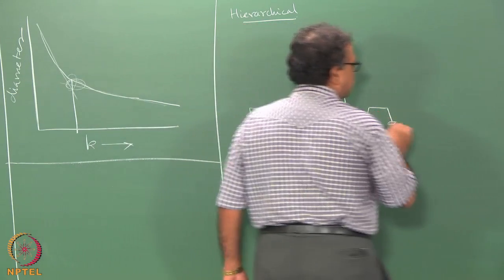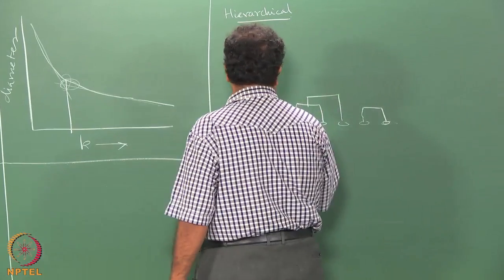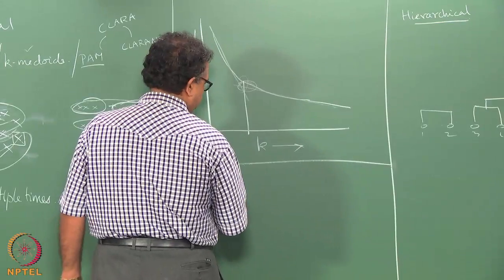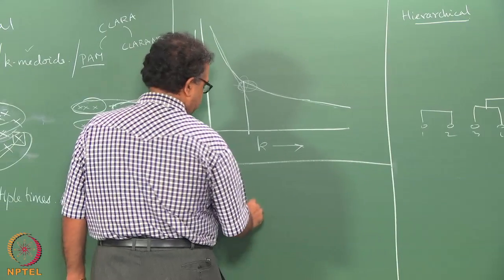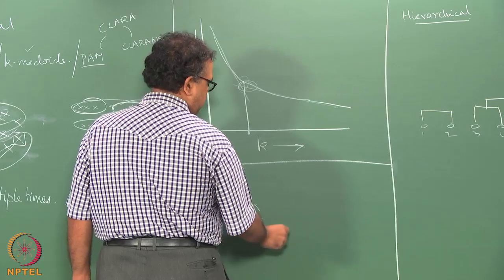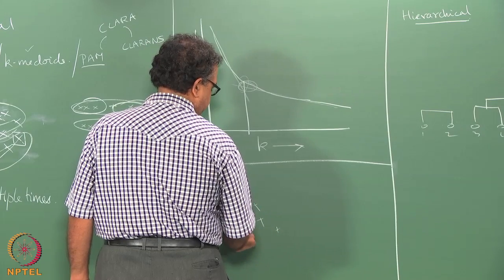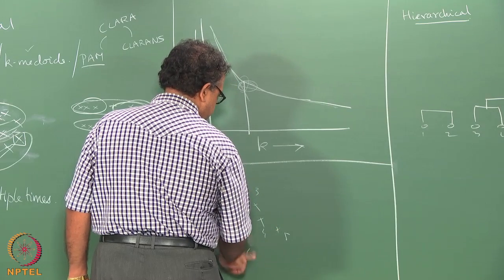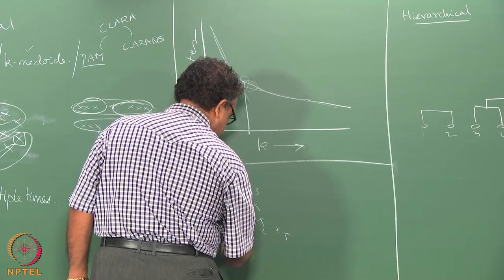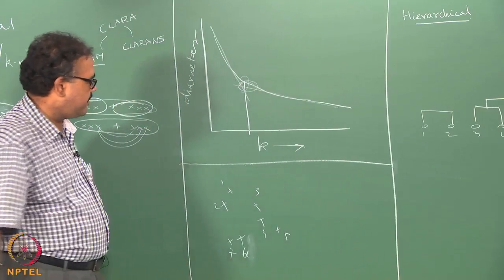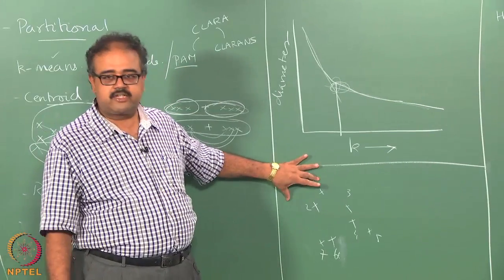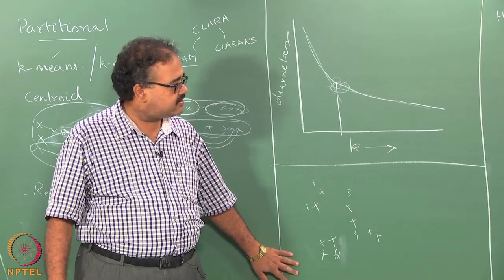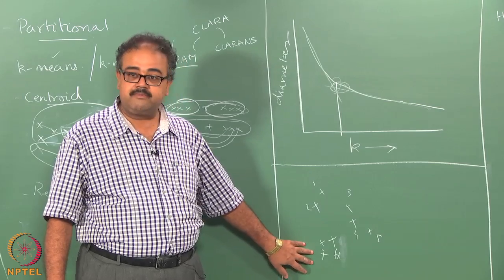Let me label the data points - I should have one, two, three, four, five, six, seven. So initially, looking at this: one and two are close together, let us merge them. Three and four are close together, let us merge them. Six and seven are close together, let us merge them.